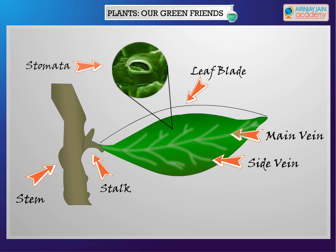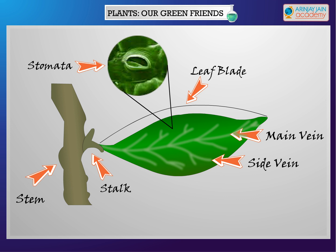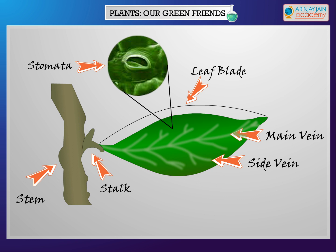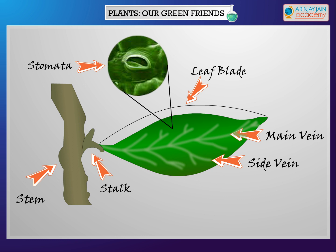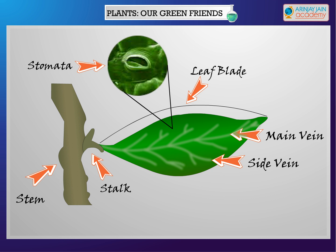Leaves have stomata on their underside. Stomata are nothing but small pores that help the plants to breathe. These stomata take in carbon dioxide and give out oxygen to other living bodies to breathe.